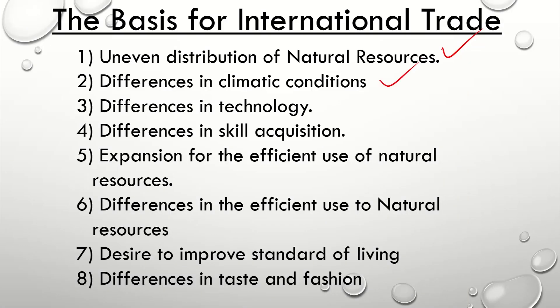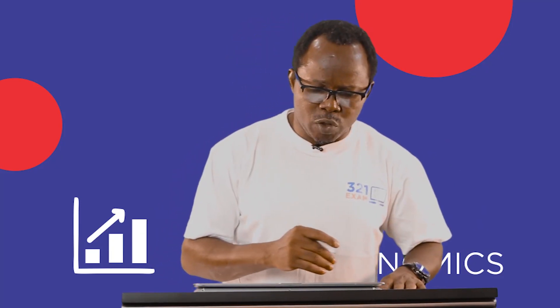Number two is differences in climatic conditions. The climatic conditions determine the kind of resources being grown, especially in agriculture. In Europe, you have the temperate condition, while in Africa — especially the sub-Saharan region — you have two seasons: the dry season and the rainy season. In Europe, you have four different seasons with different types of crops suited to each area. So there will come a time when a particular country wants to rely on another for production processes.